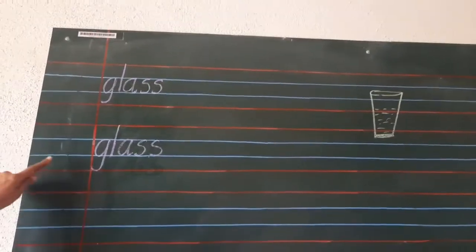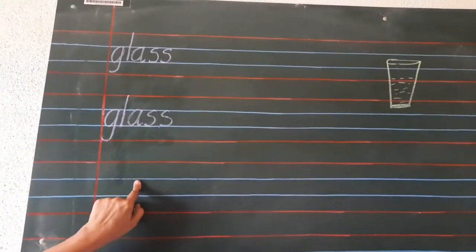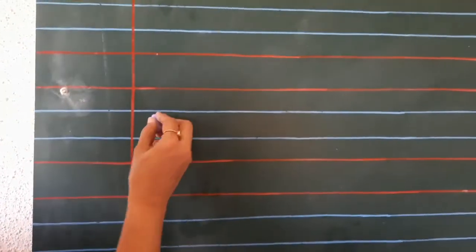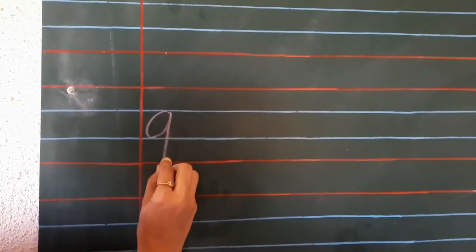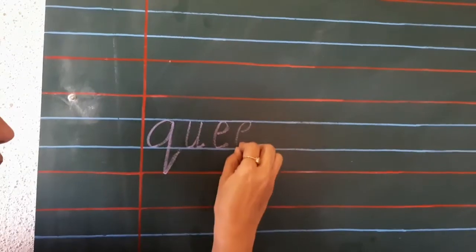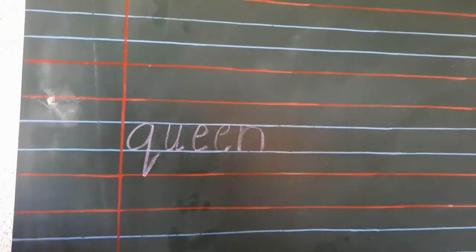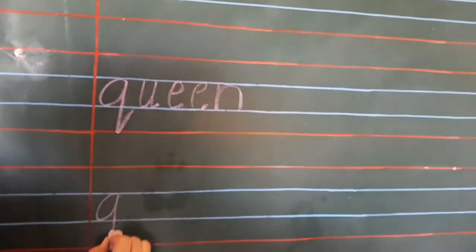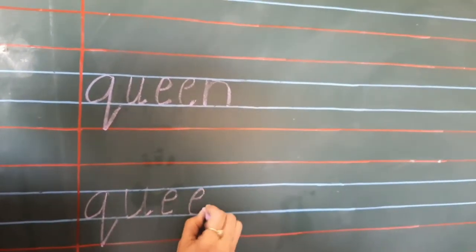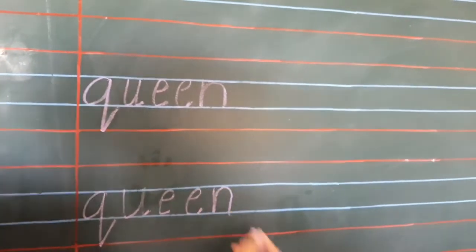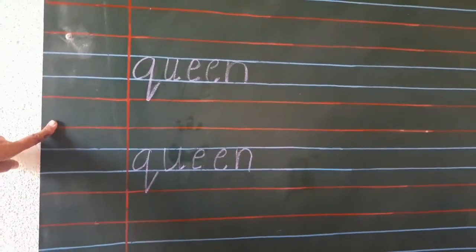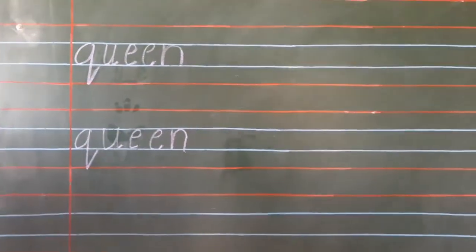Now, after writing this spelling four times, we have to leave a line and write the next word. And the next word is QUEEN. Same way, we have to write this word also four times, right? And after that, we will draw the picture.